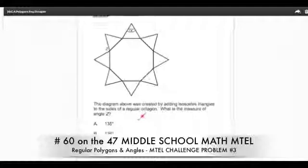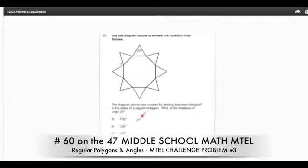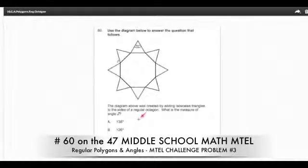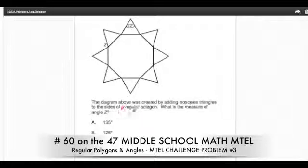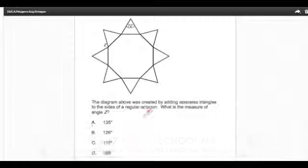It says here, it's number 60 from the 47 MTEL. I'm going to read it first and then I want you to take a few minutes to work on it. And then we're going to talk about it. So it says number 60, use the diagram below to answer the question that follows. The diagram above was created by adding isosceles triangles to the sides of a regular octagon. What is the measure of angle Z, this outside angle here? Now take a few moments, pause the video right now and solve it.